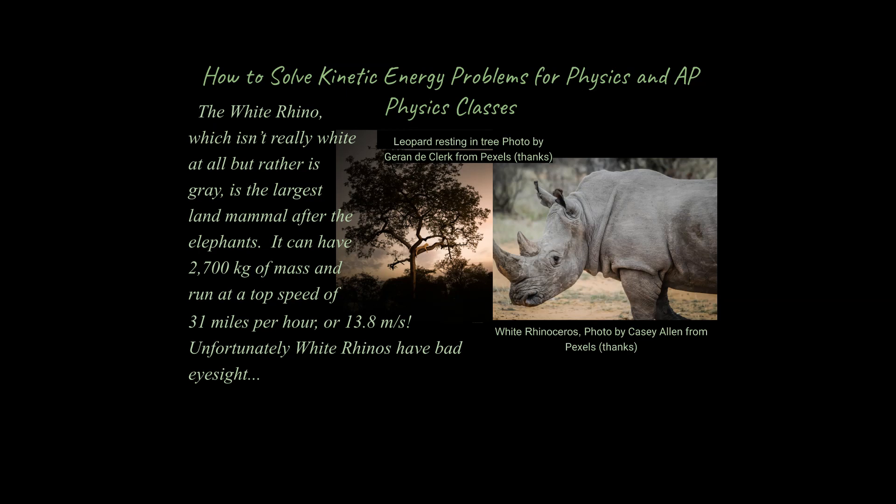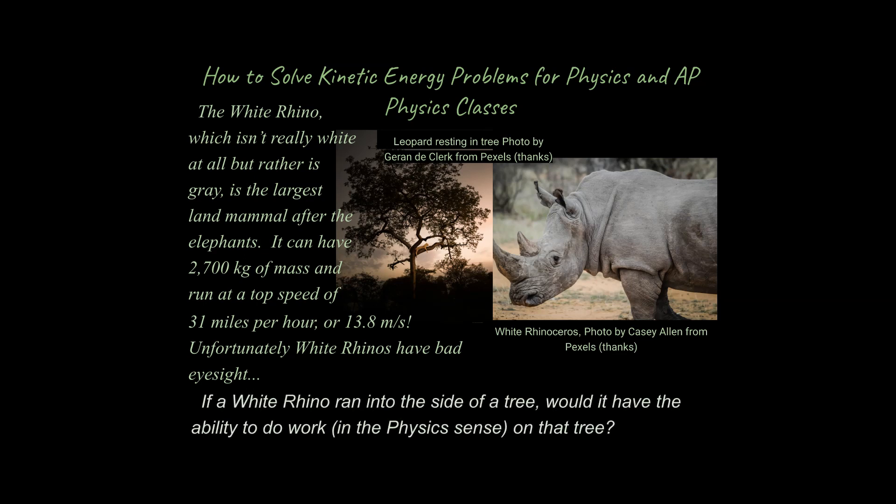Unfortunately, white rhinos have bad eyesight — they can actually run into things they're not intending to run into. So my first question is: if a white rhino ran into the side of a tree, would it have the ability to do work in the physics sense of the word? Would it have the ability to do work on that tree? And the answer is yes, of course it would. Another way of asking the same question: would it have the ability to cause change on that tree? Yes, of course. So there is a motion-based energy as well.